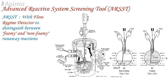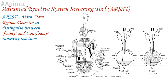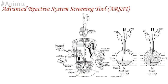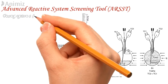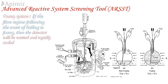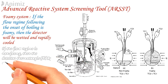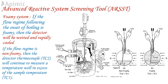The detector temperature is displayed on the ARSST screen and logged to the output data file. Prior to externally heating the chemical sample, power is supplied to an internal heating coil to establish an elevated sensor temperature well above the anticipated boiling temperature of the sample. If the flow ringman following the onset of boiling is foamy, the detector will be wetted and rapidly cool. If the flow ringman is non-foamy, the detector thermocouple will continue to measure a temperature well in excess of the sample temperature. Relief systems for non-foamy systems may be more realistically designed by treating two-phase flow discharge as churn-turbulent rather than homogeneous.